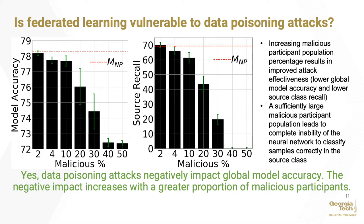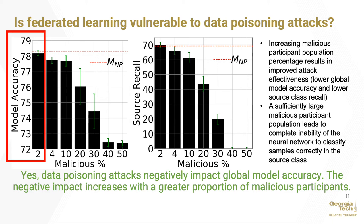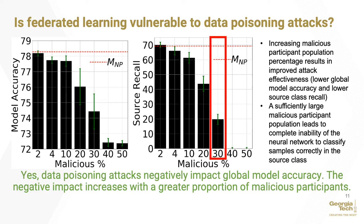The first question we investigated was determining whether federated learning is vulnerable to poisoning attacks and if so to what extent. In our experiments with both CIFAR-10 and Fashion MNIST, we observed that poisoning attacks can be detrimental to the final model's accuracy. When only 1 out of 50 participants are malicious, there is negligible impact. But as the proportion of malicious participants increases, shown on the x-axis of these graphs, the impact of the attack becomes apparent. When 30% of the population is malicious, we observed a 50% drop in source class recall. So the answer is yes — federated learning is vulnerable to data poisoning attacks.